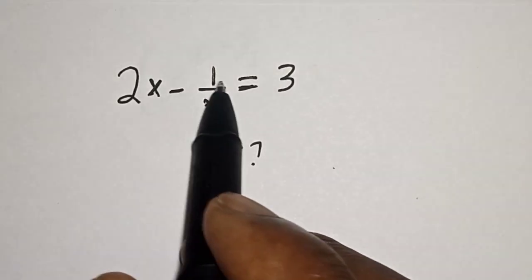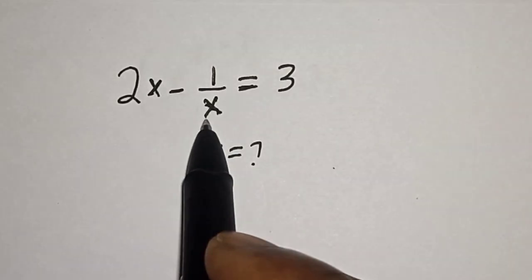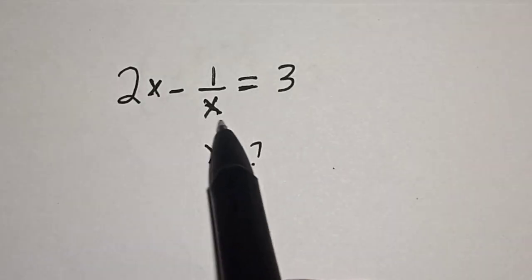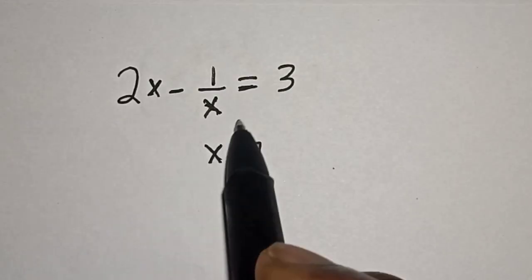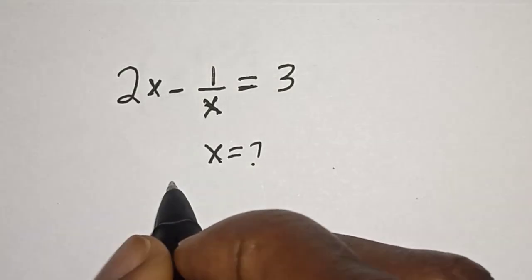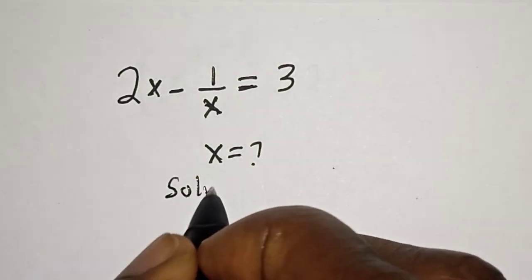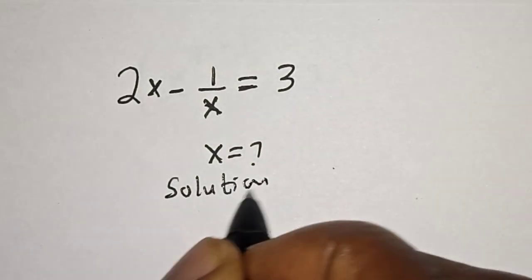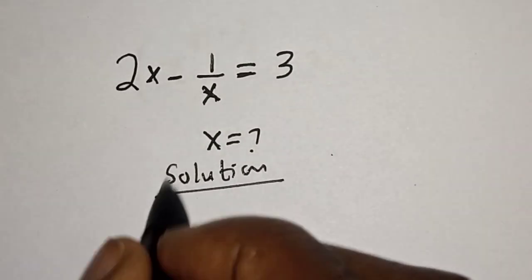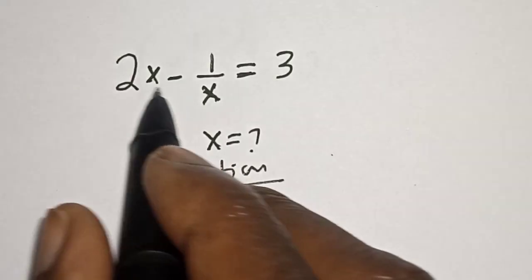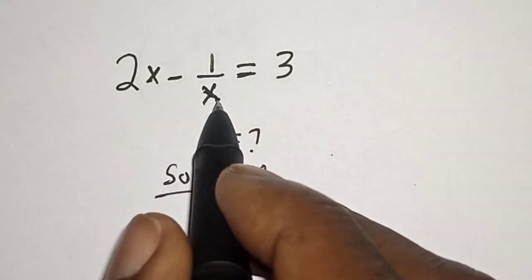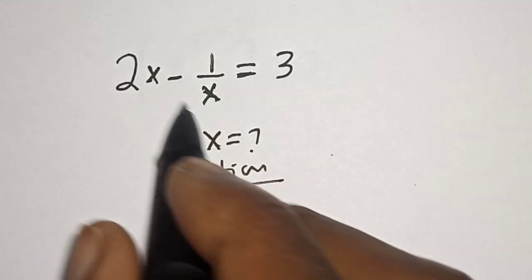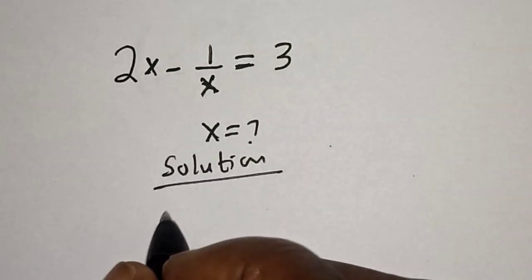2s minus 1 divided by s is equal to 3. What is the value of s? Like, share, comment and subscribe. Solution: we have 2s minus 1 divided by s is equal to 3. Let's multiply all through by s.